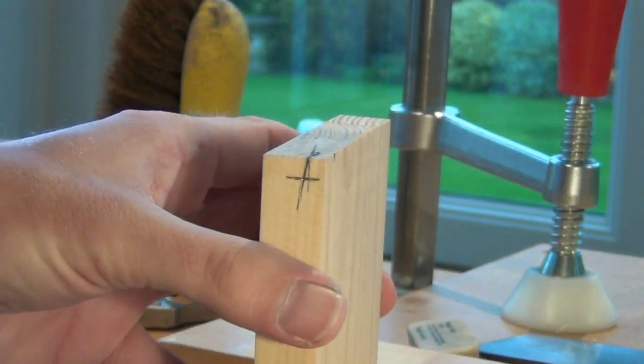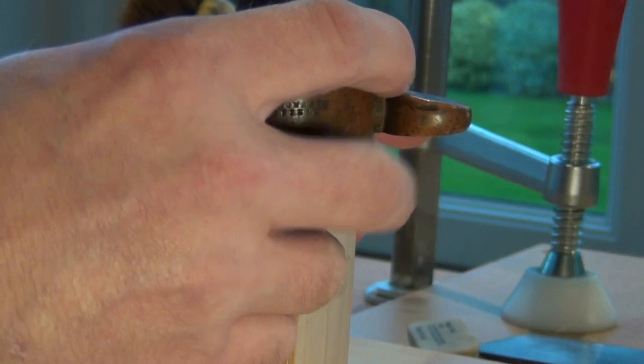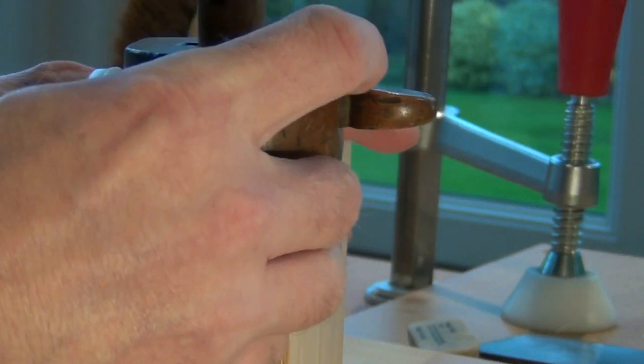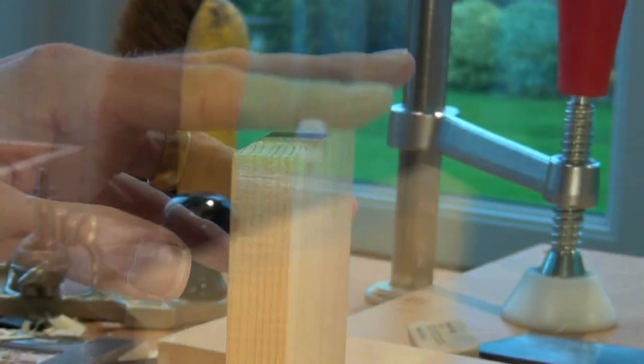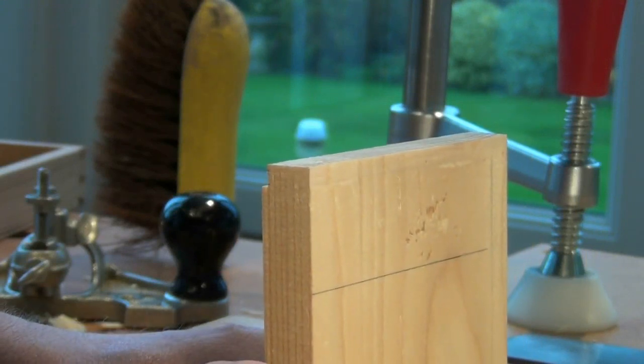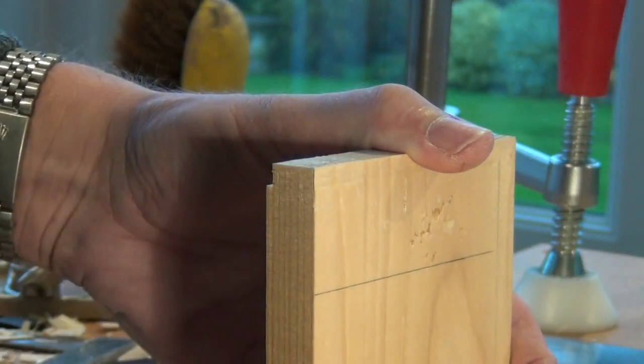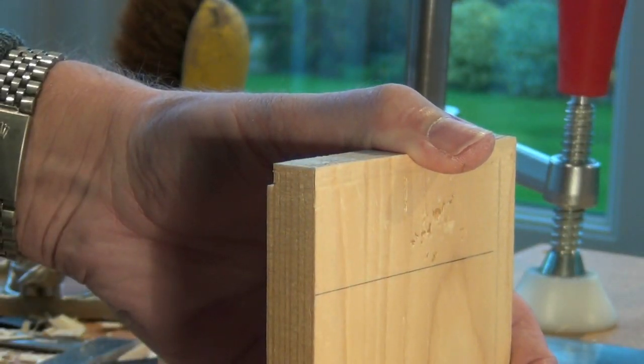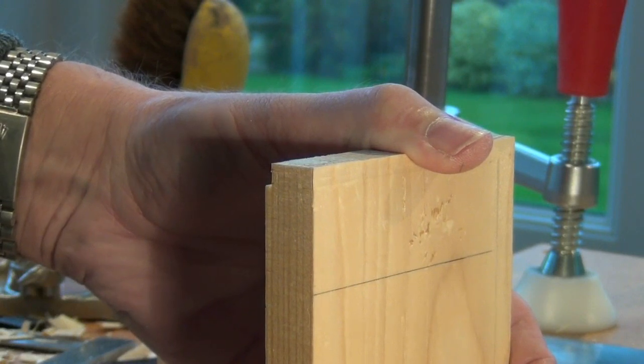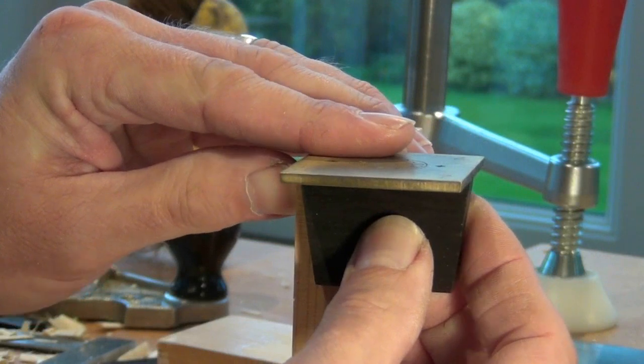On the back side of the shelf we can mark the depth again with the marking gauge. Place the shelf back in position flush at the front to the side and again mark the top of the dovetail groove. And use the dovetail marker again to mark this end.